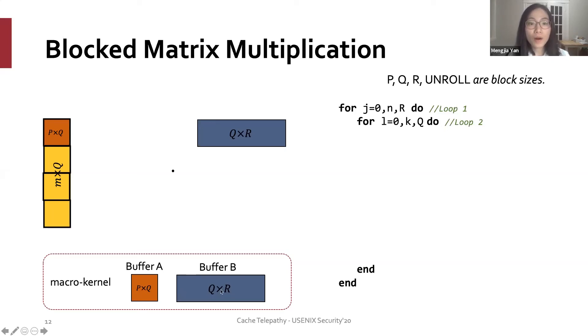Thus, loop 3 consists of two parts. In the first part, the first sub block in matrix A is copied to buffer A. Then, the sub block in matrix B is copied to buffer B in the units of q by unroll sub blocks. Each copy operation is immediately followed by a computation operation.